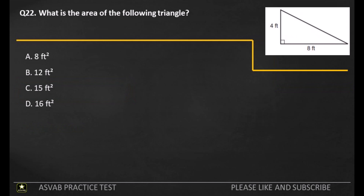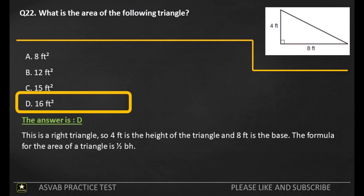Q22. What is the area of the following triangle? A: 8 ft squared. B: 12 ft squared. C: 15 ft squared. D: 16 ft squared. The answer is C. This is a right triangle, so 4 feet is the height of the triangle and 8 feet is the base. The formula for the area of a triangle is half B times H.